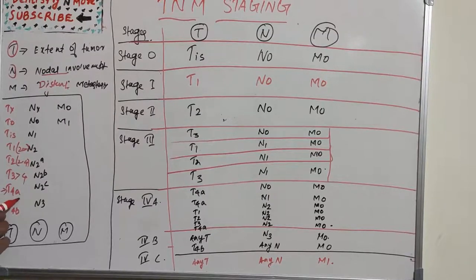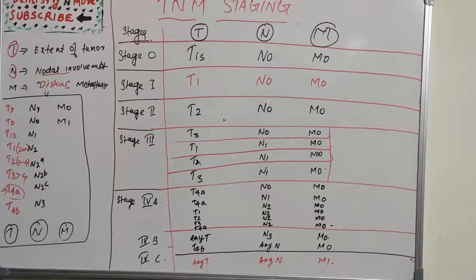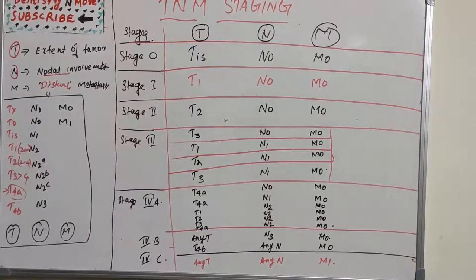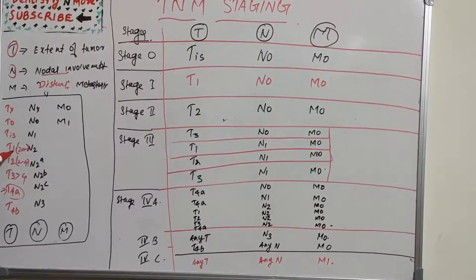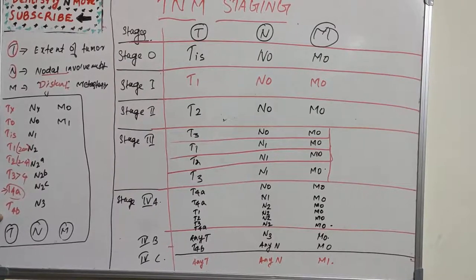T4B is very advanced, meaning tumor invades masticatory space, pterygoid plates, skull base, and encases the internal carotid artery. That's about the extent of tumor—basically the dimension: 2 centimeters, 2 to 4, more than 4, and its invasion to adjacent local structures.